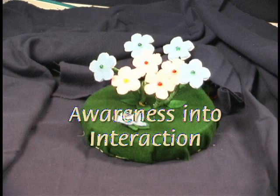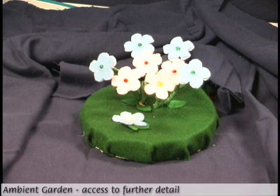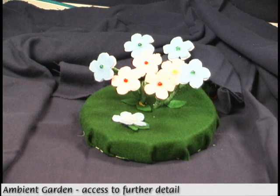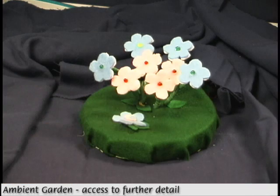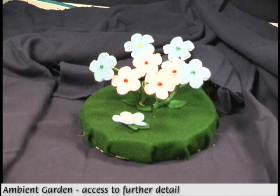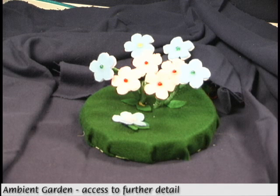Each display also allows users to request more information through a simple gesture or touch. For example, when the Ambient Garden is connected to my email inbox, touching a hidden sensor reads the senders and subject lines out loud, so I can decide whether to read my email without having to go to my computer and open my inbox.